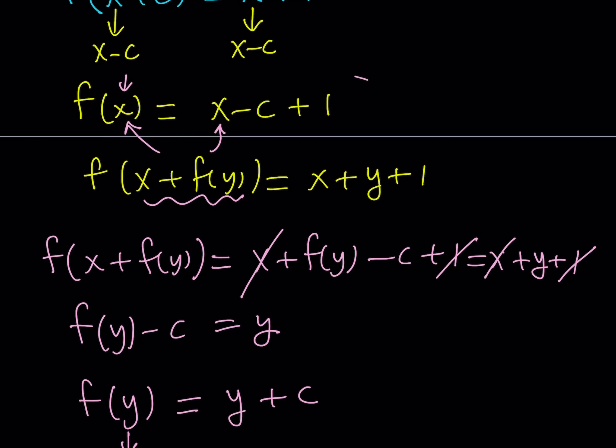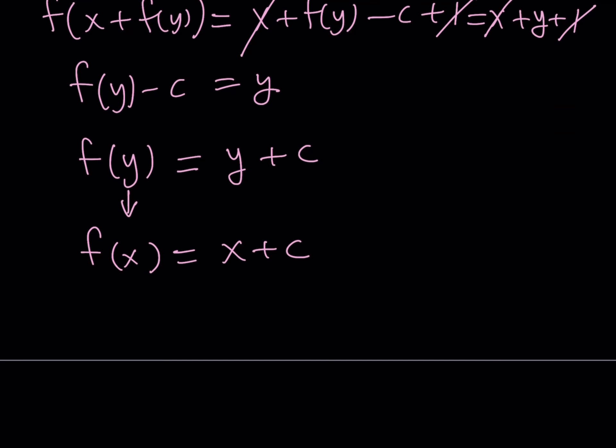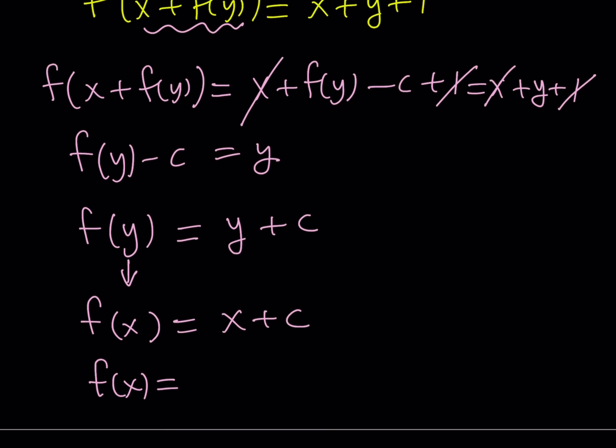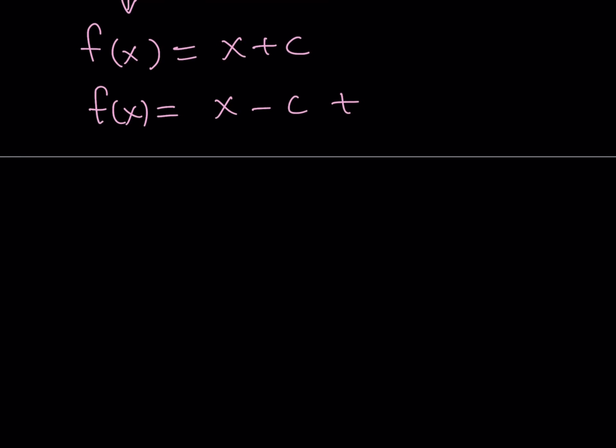So replace y with x and you get f of x equals x plus c. But at the same time, we know that f of x equals this. So what is that supposed to mean? It means that they're equal to each other. So we know that f of x equals x plus c, as well as x minus c plus 1. Since both of these expressions are equal to f of x, they need to be equal to each other. Let's go ahead and set them equal to each other then. x plus c equals x minus c plus 1. Again, this is true for all x in the domain of f. And c is a constant, but we're going to find the value of c from here.